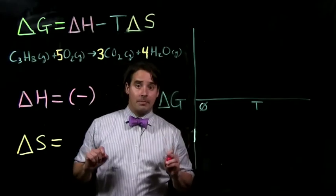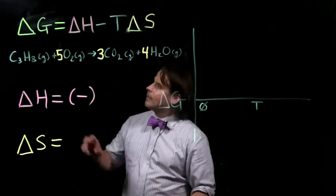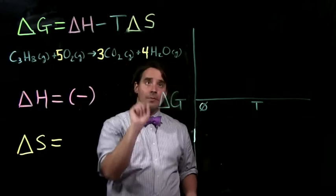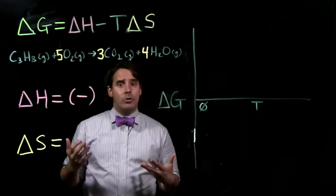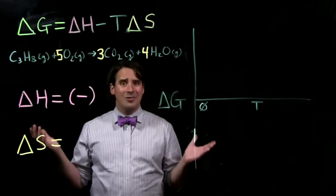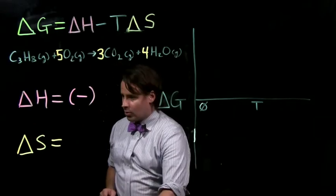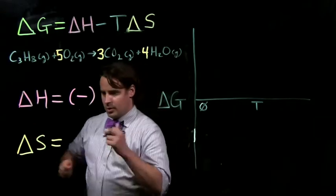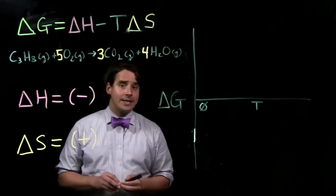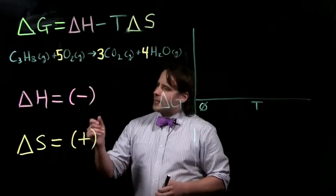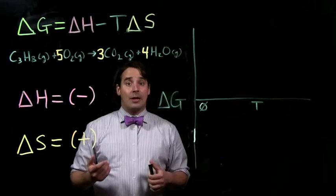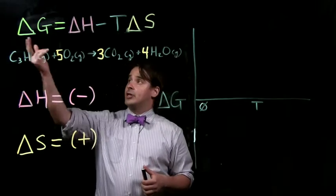What about the entropy? Here we're going from 6 moles of gas to 7 moles of gas. Generally speaking, when you're going from fewer moles of gas to more moles of gas, you're looking at an increase in entropy. So the sign of delta S here is going to be positive. Now let's take this enthalpy and entropy and see how it relates back to free energy, delta G.